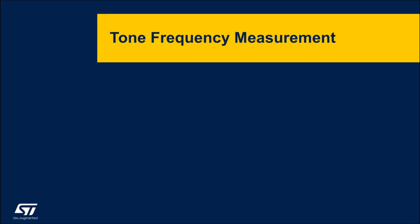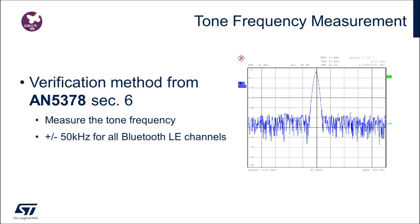Another way to verify the HSE frequency is tuned and centered is by measuring the accuracy of a known tone frequency with a spectrum analyzer, making sure that the frequency is within 50 kHz for all Bluetooth LE channels. The procedure is also described in section 6 of application note AN5378.